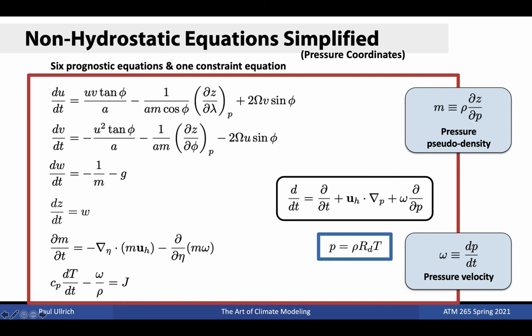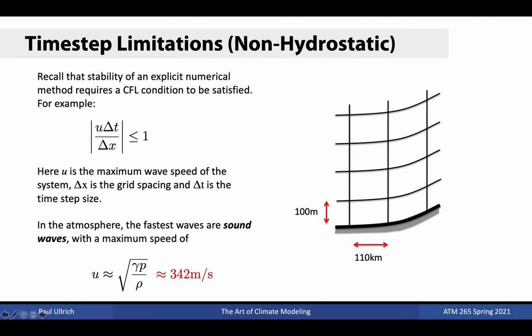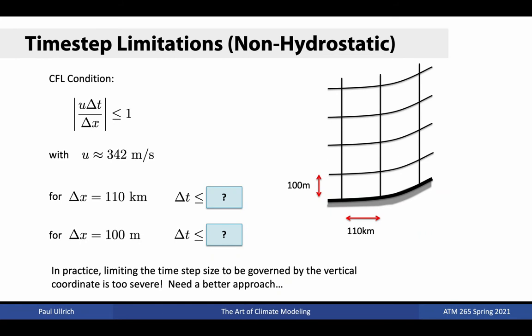There's one big issue with the non-hydrostatic equations: regardless of whether we're solving in the horizontal or vertical, we must respect the CFL condition. The CFL condition restricts the time step size to some function of the grid spacing and the maximum wave speed. In the atmosphere, the fastest waves are sound waves with a maximum speed of around 342 meters per second. Because of the pancake-y nature of grid cells, the horizontal time step size will be restricted by the grid spacing in the vertical direction, which is a thousand times smaller. For a horizontal delta x of 110 kilometers, we get a maximum time step of 321 seconds; for a vertical delta x of 100 meters, only 0.3 seconds. Thus, if our time step were limited by the vertical grid spacing, we would require around a thousand times more computation.